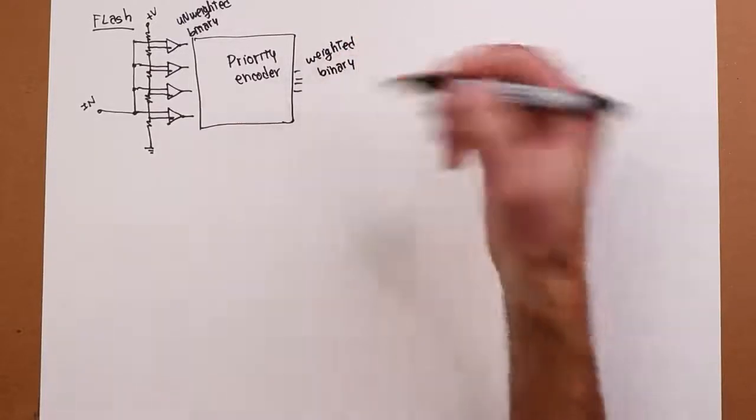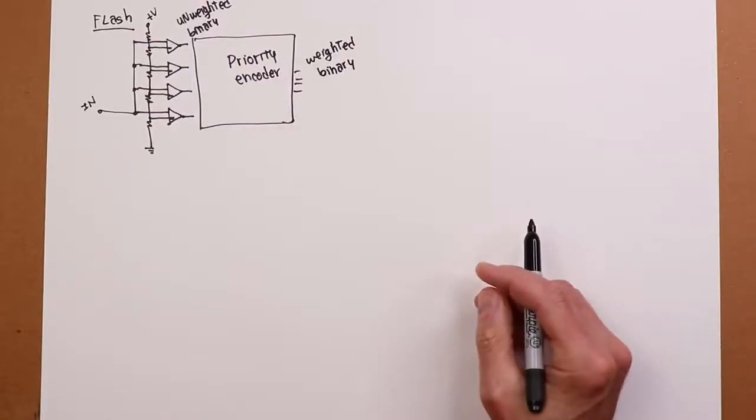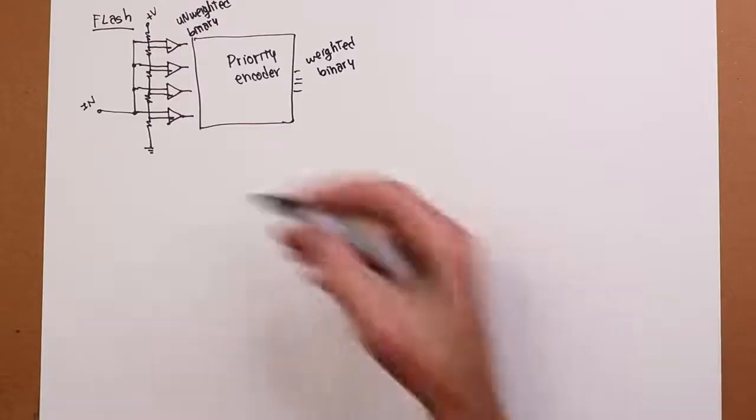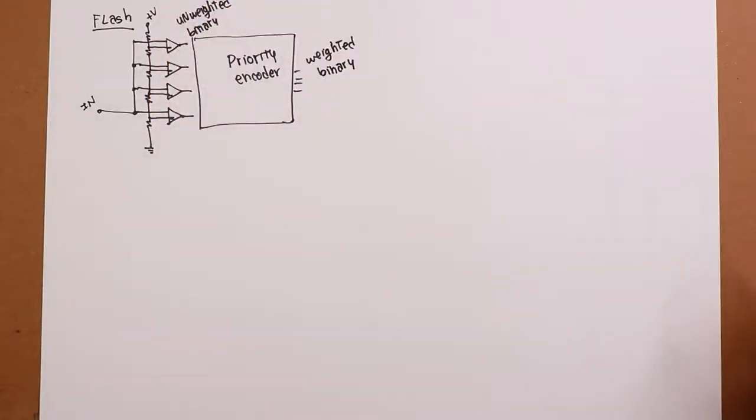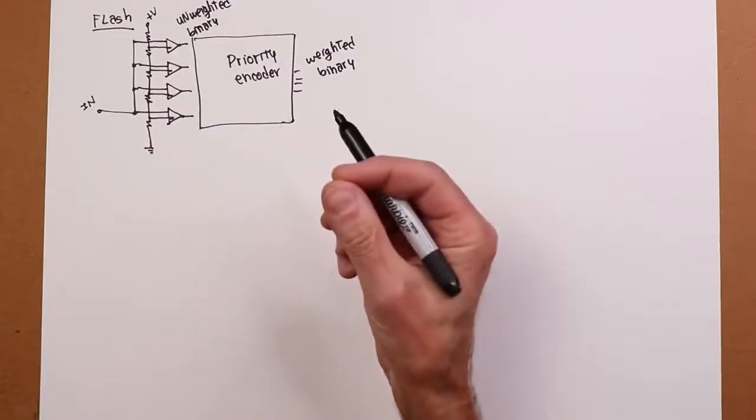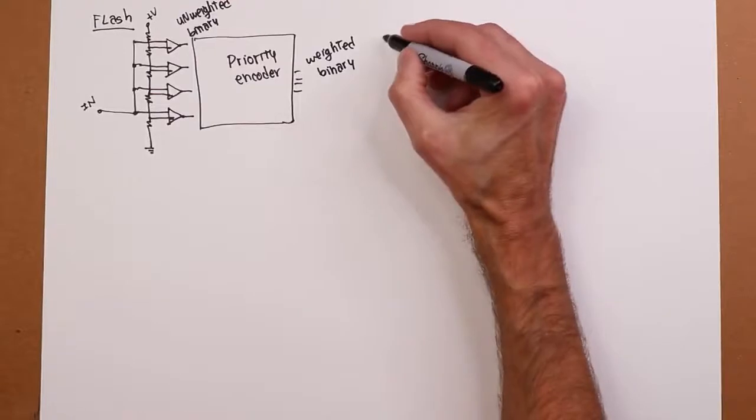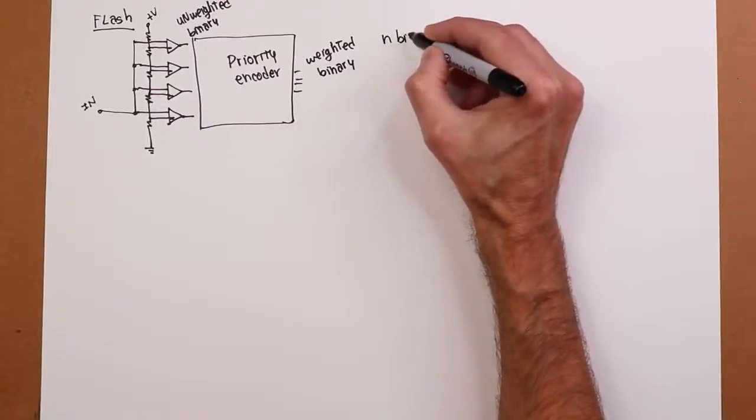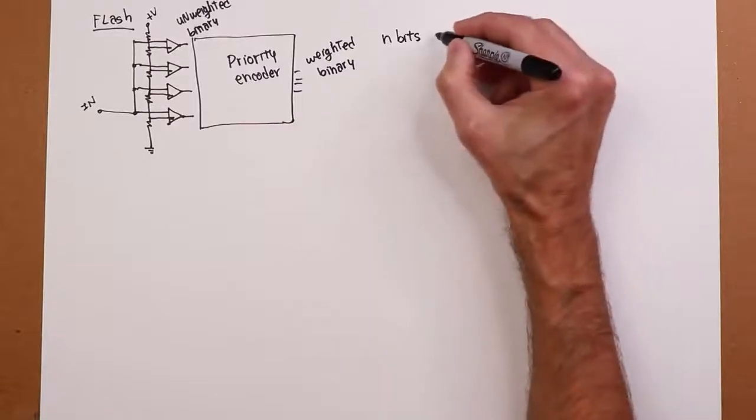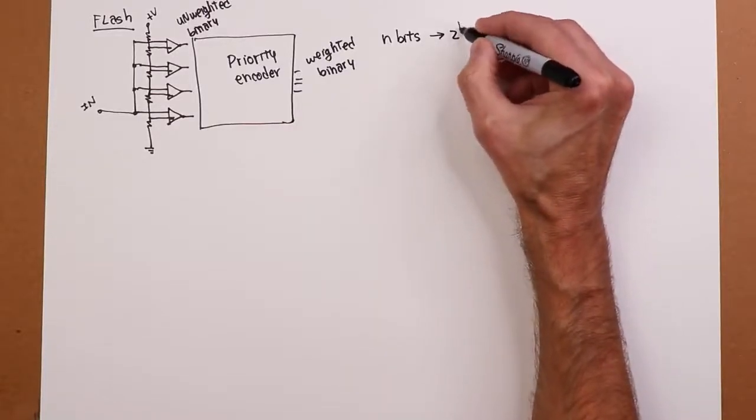Well, that seems simple enough. Well, what's the downside? Lots of comparators. Like how many? Well, you have to have a comparator for every single value. So if you have n bits, like you get an 8-bit digitizer, you need 2 to the n comparators.